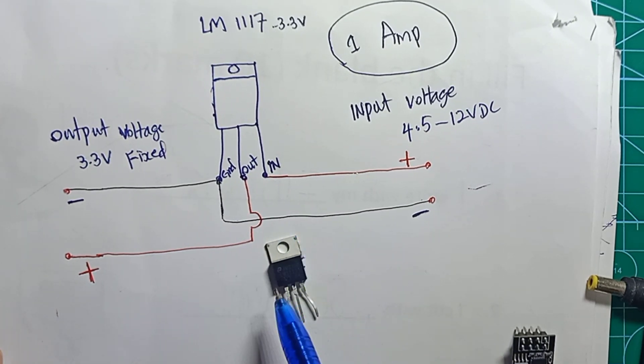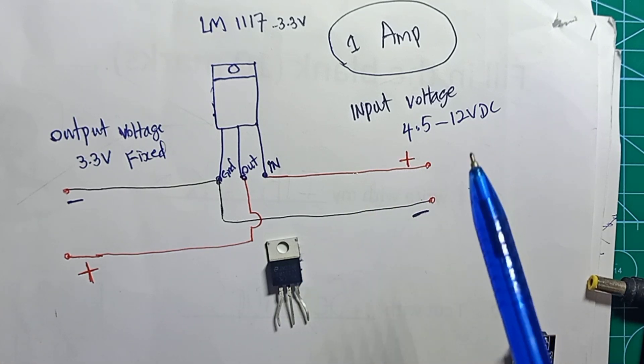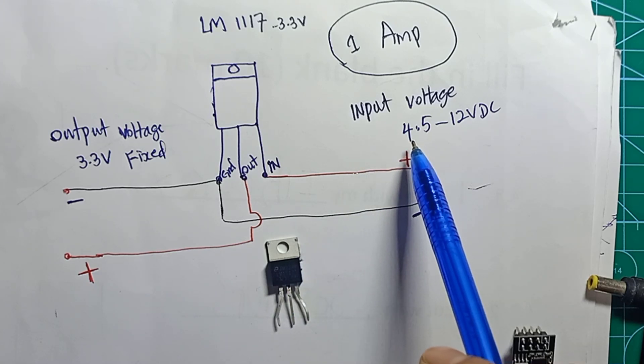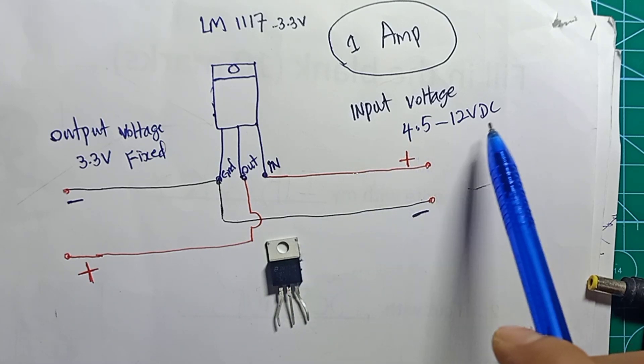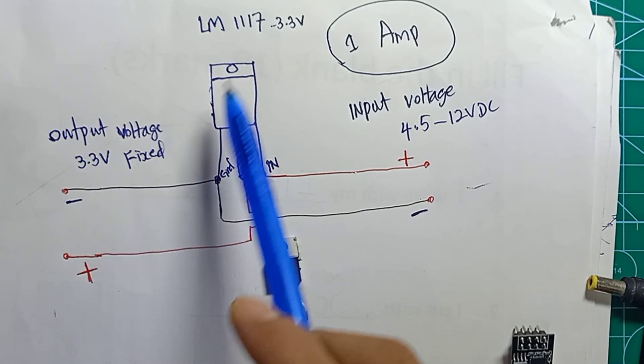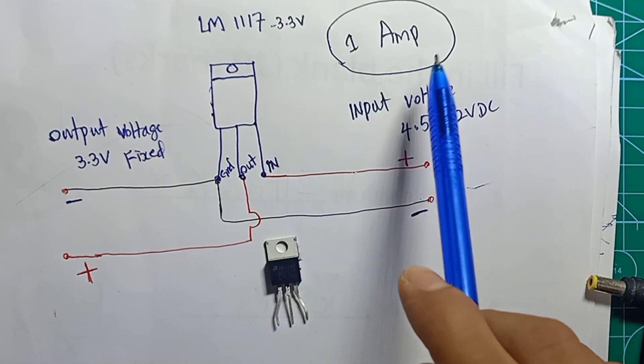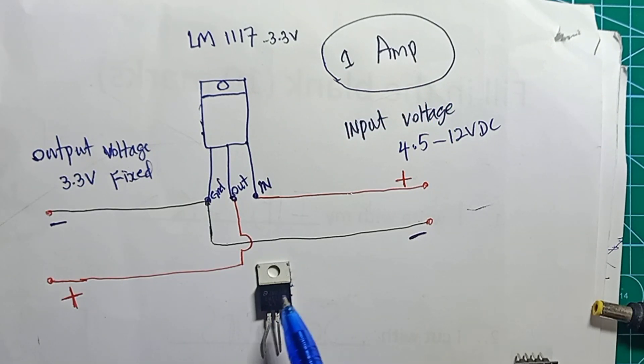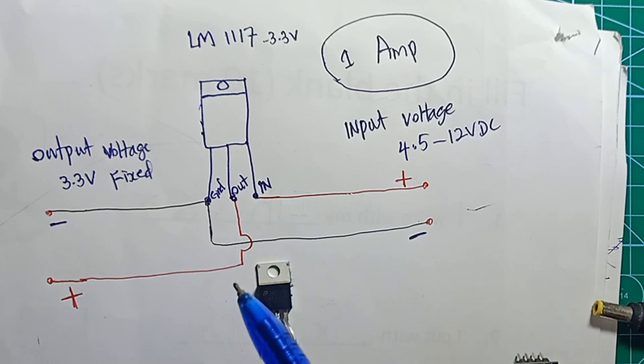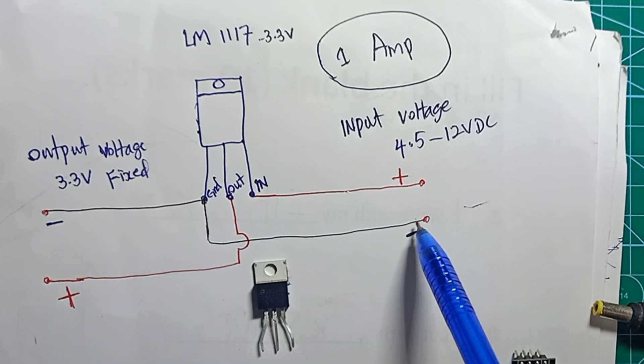This IC is a regulator, and the input voltage could be between 4.5 to 12 volt DC, and the output is 3.3 volt fixed. The current rating is 1 ampere. When you place it in this position, the first pin is positive in, the second pin is positive out, and the third pin is negative in and negative out.